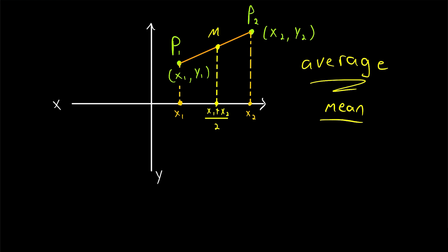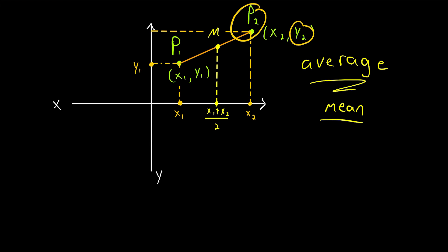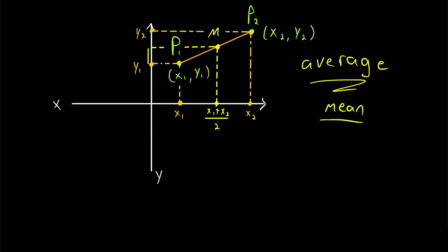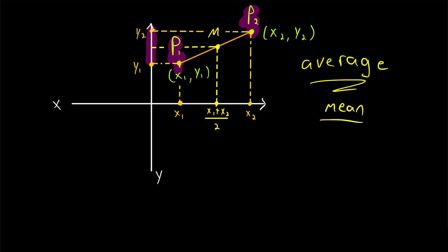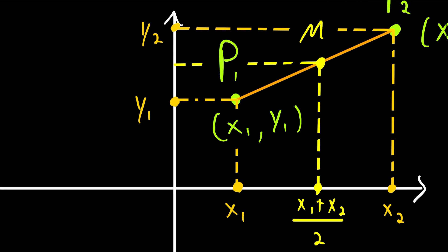And we do the same thing for the vertical position — for the y-coordinate. The y-coordinate, or vertical position, of the point p1 is y1. The y-coordinate, or vertical position, of the point p2 is y2. The midpoint of p1 and p2 should have a vertical position, or y-coordinate, that's halfway between y1 and y2. That should make sense: if the midpoint is halfway between the horizontal positions of these two points, and it's halfway between the vertical positions of these two points, then it is the midpoint.